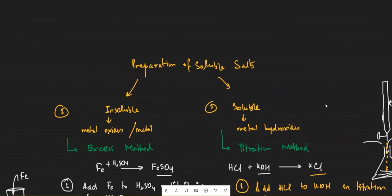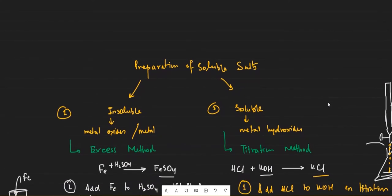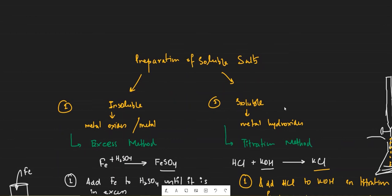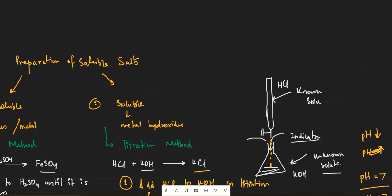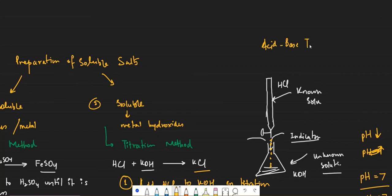The titration method is used when your starting material is soluble — for example, a metal hydroxide like KOH. Since KOH is soluble, it won't settle when all the HCl is consumed, so there is nothing to indicate the reaction is complete. Titration is the technique used to find the concentration of an unknown solution using a known solution.